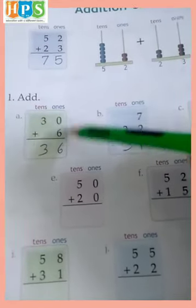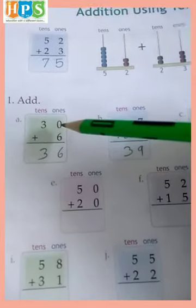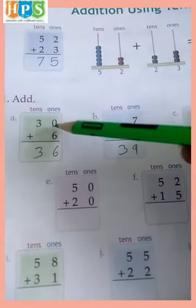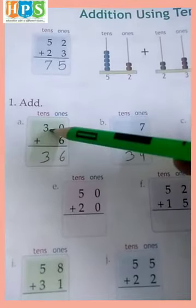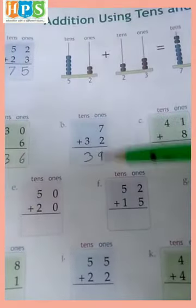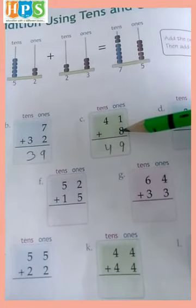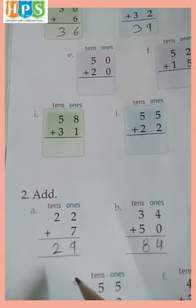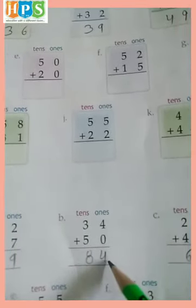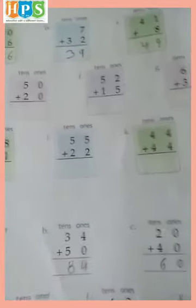This is the 1s digit and this is the 10s digit. 0 plus 6 equals 6. 3, 7 plus 2 equals 9. We write 3 as it is. 1 plus 8 equals 9, and we write 4 as it is. Question number 2: 2 plus 7 equals 9, and we write 2 as it is. 4 plus 0 equals 4. 3 plus 5 equals 8.